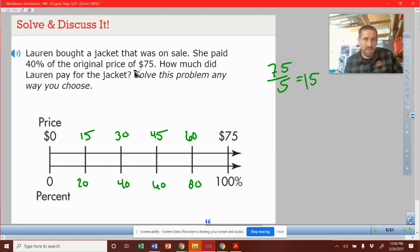So she paid 40% of the original price. How much did Lauren pay for the jacket? She ended up paying 40%, which is $30 for the jacket.